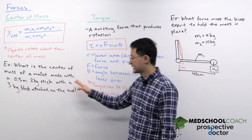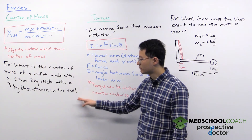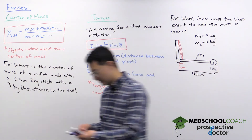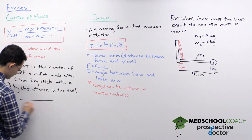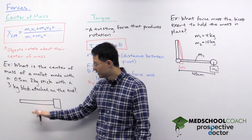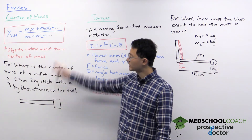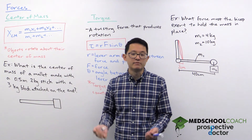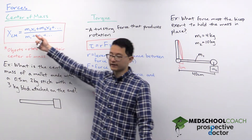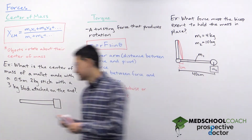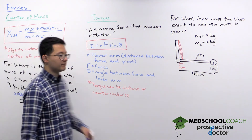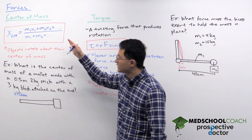Let's look at an example question: what is the center of mass of a mallet made with a half-meter, two-kilogram stick with a three-kilogram block attached on the end? We can draw the situation — a half-meter stick with a three-kilogram block attached. To calculate the center of mass we first need to define a position we'll call zero. Let's call zero the very start of the stick, at zero centimeters.